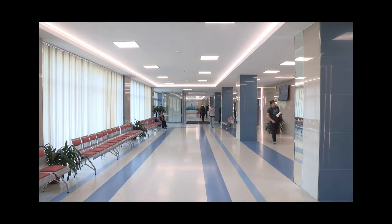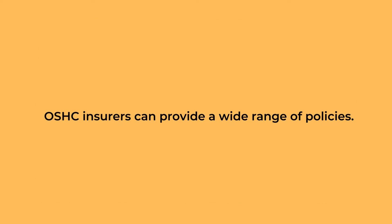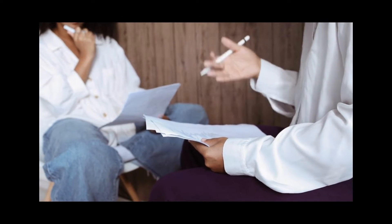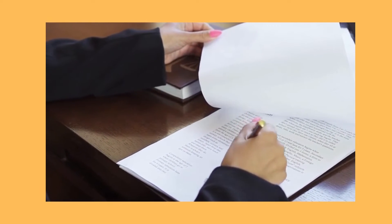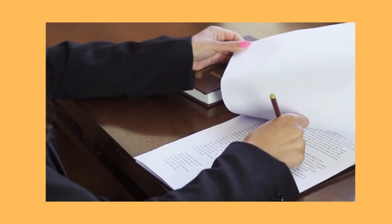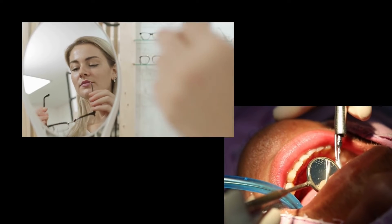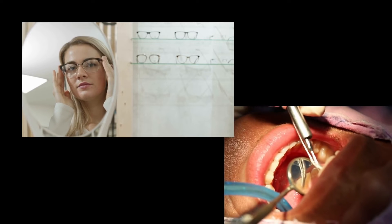Overseas student health cover covers doctor consultations, certain hospital care, ambulance transport, and a restricted range of medicines. OSHC insurers can provide a wide range of policies. These can range from a basic product that simply covers the legally required minimum services, to comprehensive products that cover additional services as defined by the policy, in addition to the legally required minimum services.